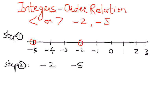Therefore, negative 2 is greater than negative 5. That is the correct inequality symbol we're going to place between negative 2 and negative 5. We can also say negative 5 is less than negative 2, because negative 5 is farther away from the origin when compared to negative 2. Therefore, negative 5 is less than negative 2. We can also say negative 2 is greater than negative 5.